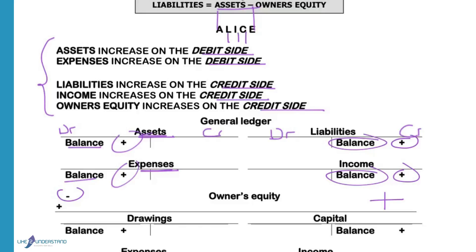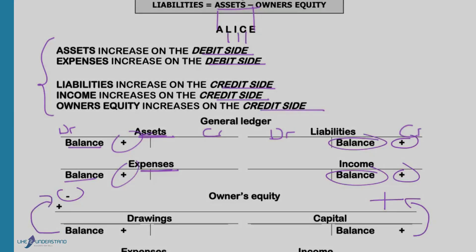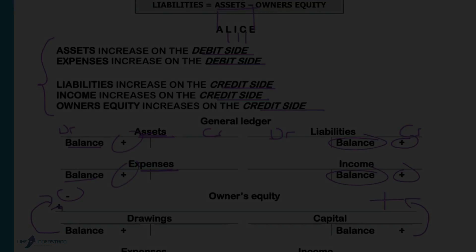There are four things that affect owner's equity. If the owner gives capital to the business, the capital account is credited — the business owes the owner more, so the equity increases. Drawings is when the owner takes goods or money from the business. That means the business owes him less money, so therefore the equity will increase.